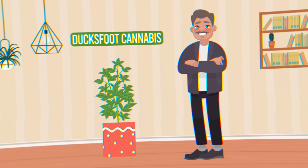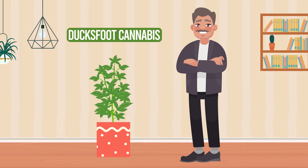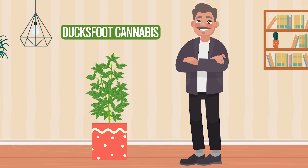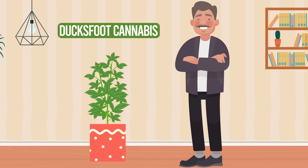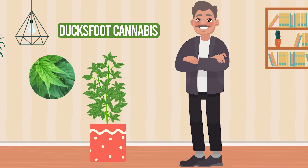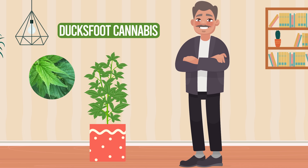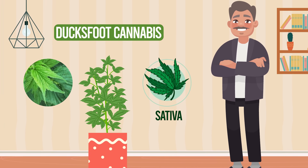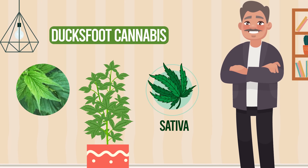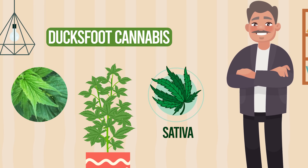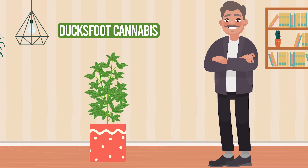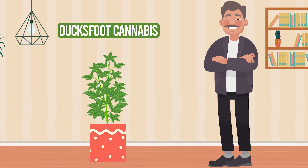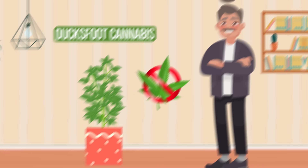Ducksfoot cannabis comes from Australia and, as the name suggests, it has webbed foot-like leaves. This is a sativa strain and because it bears little resemblance to a normal cannabis plant, it is often grown in the open where growing cannabis is illegal.